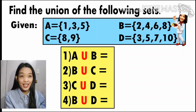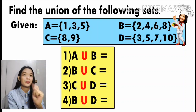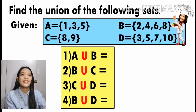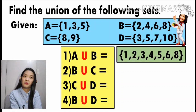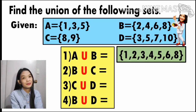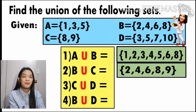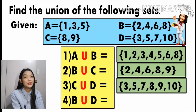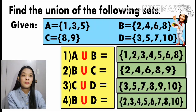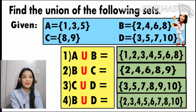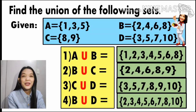Let us check your answers. For number one, combine the elements — the answers are one, two, three, four, five, six, eight. Number two: the answers are two, four, six, eight, and nine. Number three: three, five, seven, eight, nine, and ten. And for the last one: two, three, four, five, six, seven, eight, and ten. Are your answers correct?